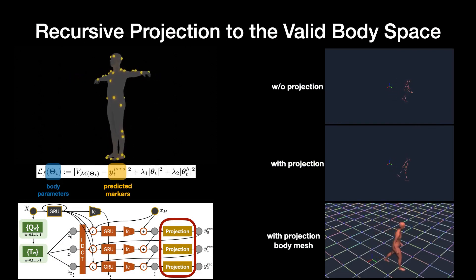Our marker prediction approach has a significant advantage. Since we know the association between the markers and the SMPL body model, it is easy to solve for the SMPL parameters from the markers. SMPL provides a strong prior model of valid human body shapes and poses. As we observed with 3D joints, predicted markers can drift from valid body shapes over time. Thus, we propose a recursive projection scheme applied at testing time.